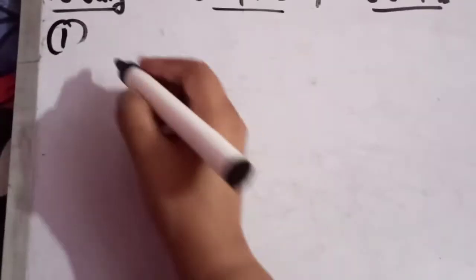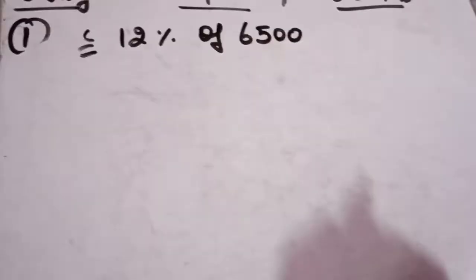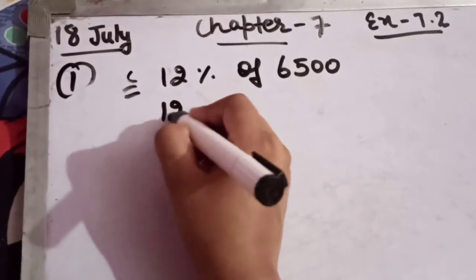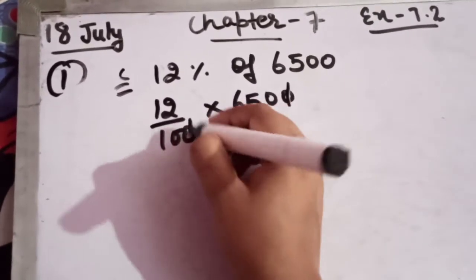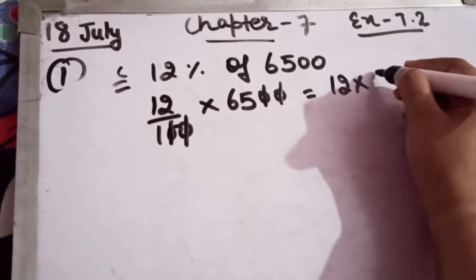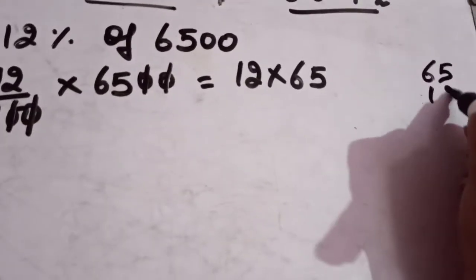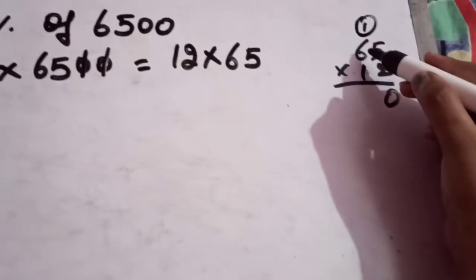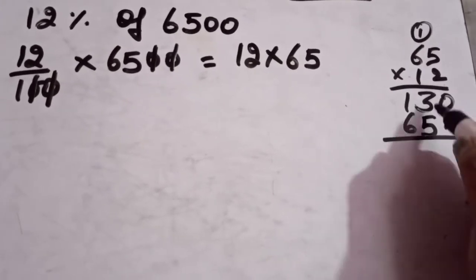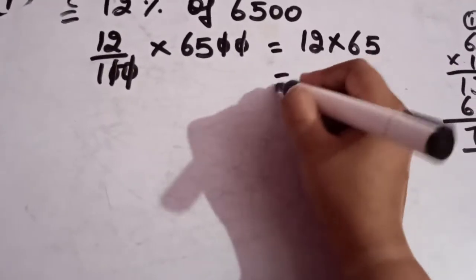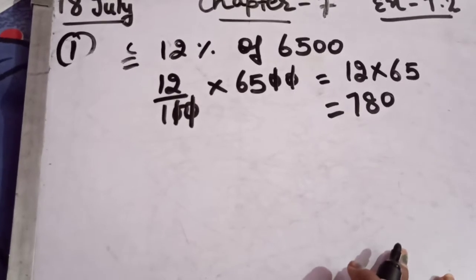Part C: 12% of 6500. Remove the percentage sign: 12/100 × 6500. Cancel the zeros, leaving 12 × 65. Multiplying: 65 × 12 — 2×5=10 carry 1, 2×6=12+1=13; then 1×5=5, 1×6=6 — giving 130+650=780. So 12% of 6500 equals 780.